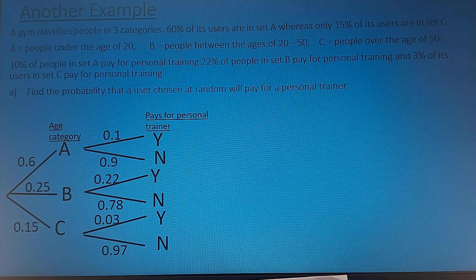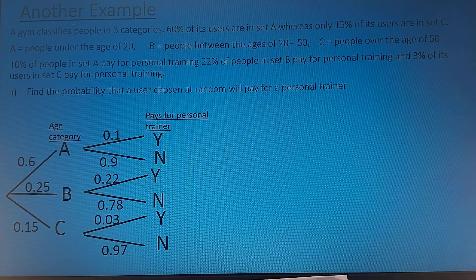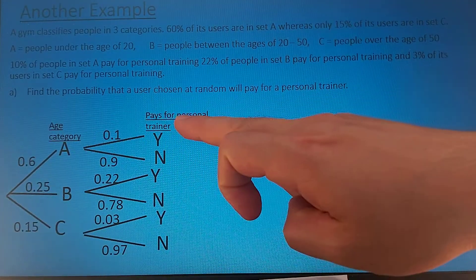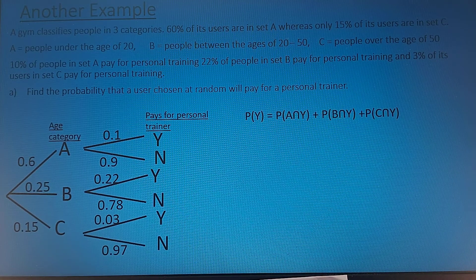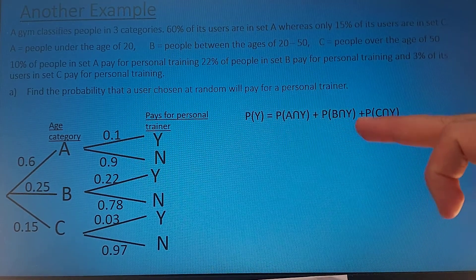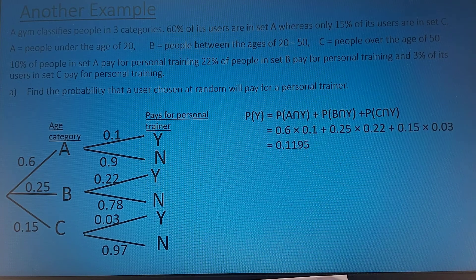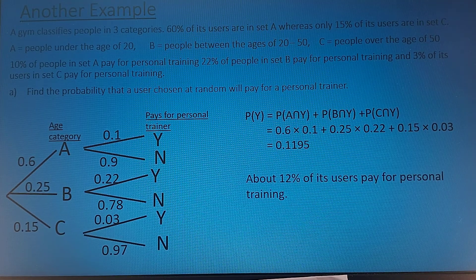So we're asked: what's the probability that a user chosen at random will pay for a personal trainer? Personal trainers will come from A and Y, B and Y, or C and Y — you're either young and pay for training, middle aged and pay for training, or old and pay for training. We can conclude that about 12% of gym users pay for personal training.